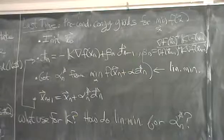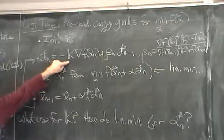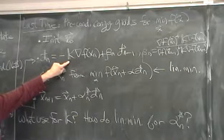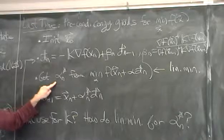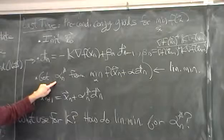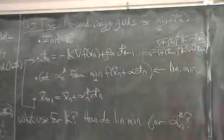Now this begs two questions. Now, the first is, in particular for us, well, what are we going to use for this K, this preconditioner? And secondly, how do we actually carry out this third step here? How do we actually find the best point along a line?